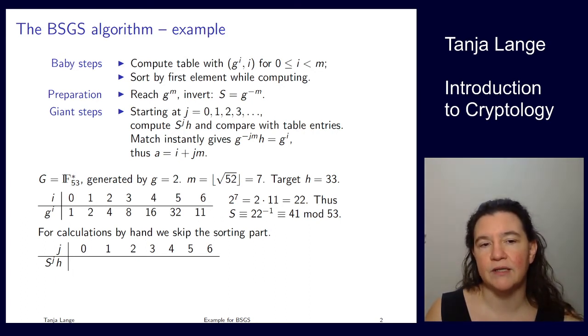At j equals 0, we're looking at s to the 0, so that's just 1 times h, and our target h was 33, so the first number we fill in is 33. For the next step, we have a multiplication by s because now it's s to the 1, so we're getting 41 times 33 mod 53, which is 28.